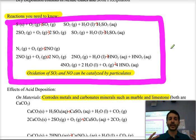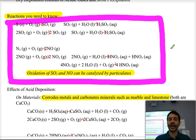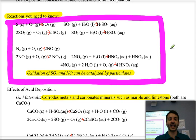The source of SO2 is burning fossil fuels because they contain sulfur. Nitrogen monoxide is formed by high temperatures in the internal combustion engine, which breaks the nitrogen triple bond and reacts with oxygen to form NO, which then reacts with more oxygen to form NO2. Eventually, NO2 reacts with water to form nitrous acid and a small amount of nitric acid.